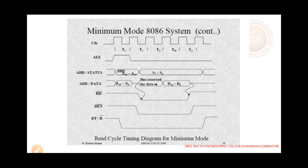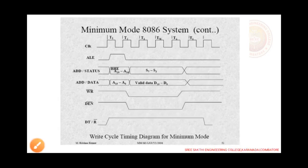DT/R bar equals 0; the receiver is selected from T1 to T4 pulses. Next is the write cycle for the 8086 processor. Normally we have four cycles: T1, T2, T3, T4. When ALE is enabled, the latches separate the address from the multiplexed address and data lines. During T1, A19 to A16 are selected. During T2 to T4, S7 to S3 are selected, which are status lines.